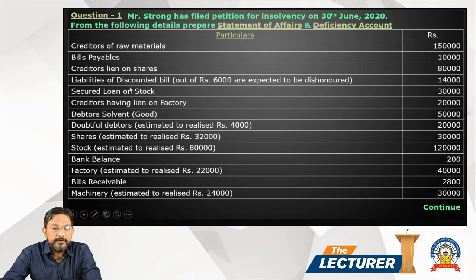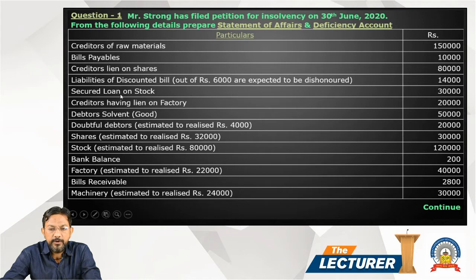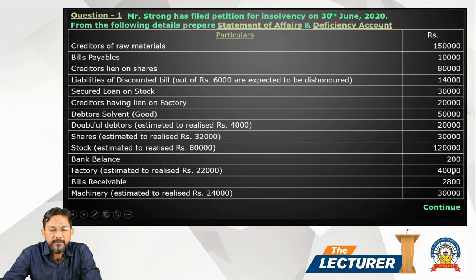Secured loan on stock: if the loan is 30,000, there is a stock value. Secured loan on stock — if the loan is 20,000 and the value is 40,000, the loan is fully covered by the stock.